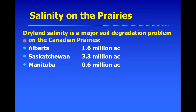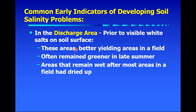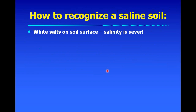Dryland salinity is a major degradation problem across the Canadian prairies. Data from the three prairie provinces shows 1.6 million acres in Alberta, 3.3 million in Saskatchewan, and 0.6 million in Manitoba — just looking at severe and very severe cases. In my opinion these numbers are probably somewhat out of date. In terms of early indicators in discharge areas, back in the 1960s through 80s prior to seeing white salt areas, farmers would report these areas were actually the better-yielding areas — there was better moisture before too much salt accumulated. Over time, these areas would stay greener longer into summer and remain wetter longer when the rest of the field had dried up.